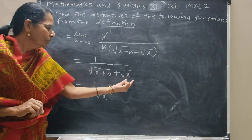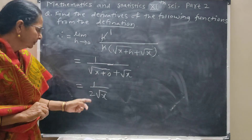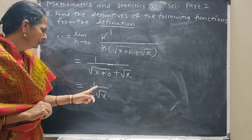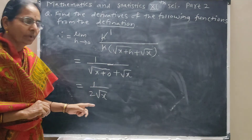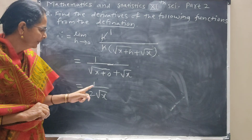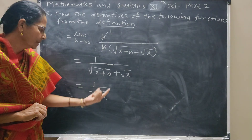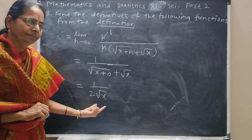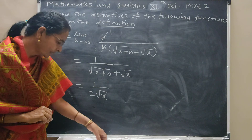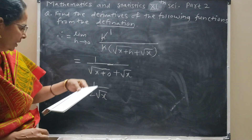Since √x + √x = 2√x, the result is 1 upon 2√x. Therefore, the derivative of √x is 1/(2√x). This is the answer.